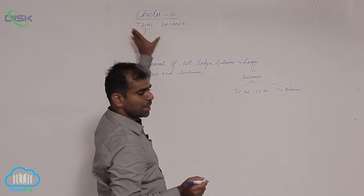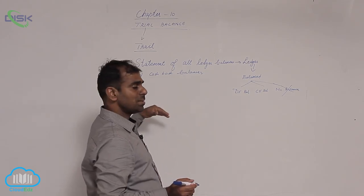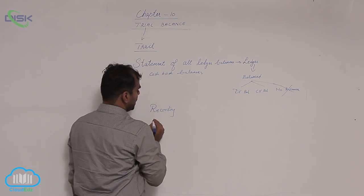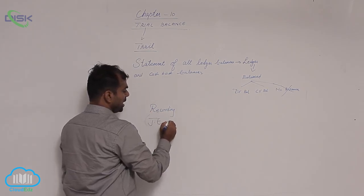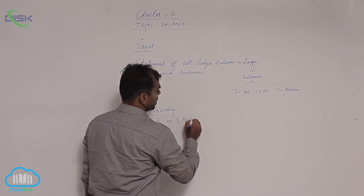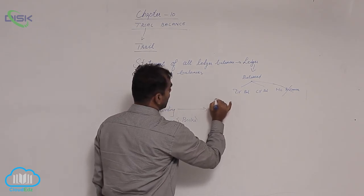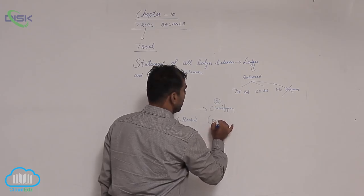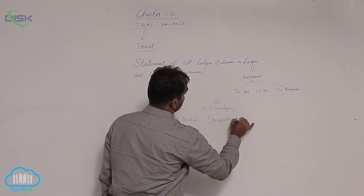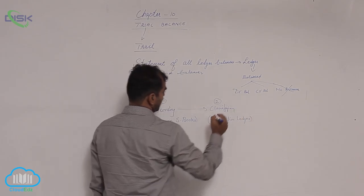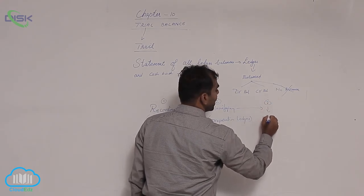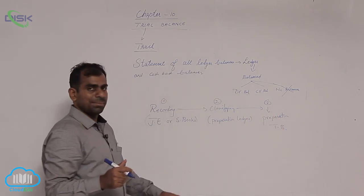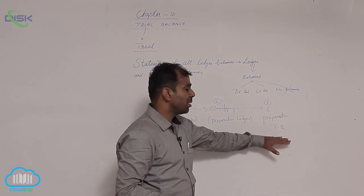To understand trial balance, let us quickly recapitulate the previous steps done before preparing it. First is recording — you learnt this by passing journal entries or by preparing subsidiary books. After recording, you classify, which is nothing but the preparation of ledgers. Then the third step is you prepare a trial balance, meaning you take help of your ledger balances and prepare a trial balance.